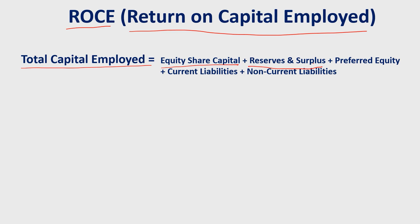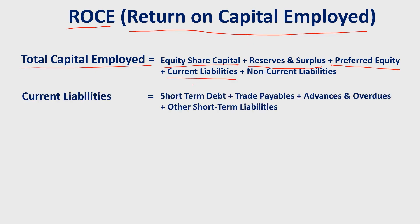This is visible on the balance sheet. Third, preferred equity — this represents strategic investment in the company where capital is infused with preference over common shareholders. Generally, for listed companies on the stock market, preferred equity is not very common. Next, current liabilities — these are short-term liabilities like short-term debt, trade payables, advances, and overdues.